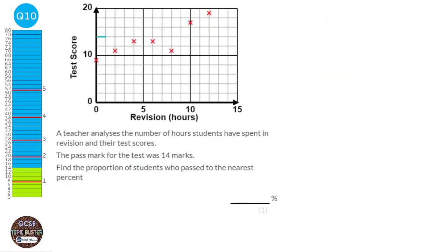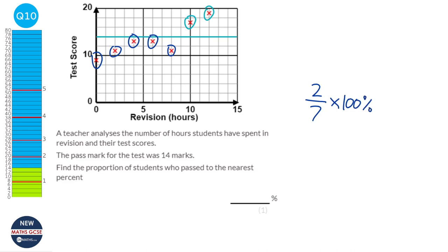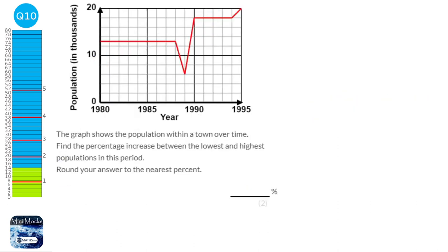The pass mark for the test is here, and we can see that there are two students who passed the test. So it's 2 students out of 7 in total. And we want this as a percentage, so we do 2 over 7 times 100, which gives us 28.571... It says it wants it to the nearest percent, so that would be 29%.